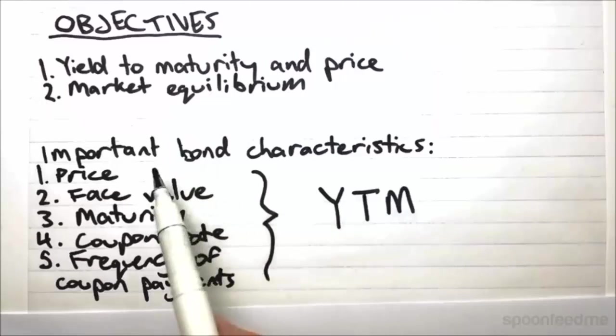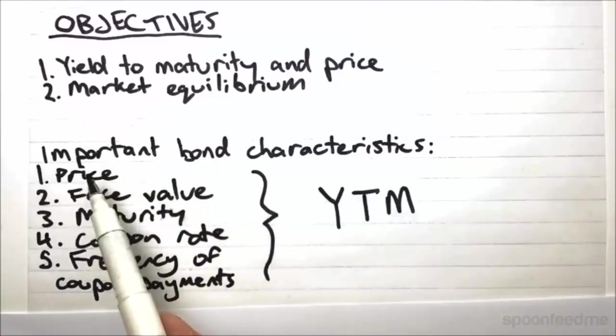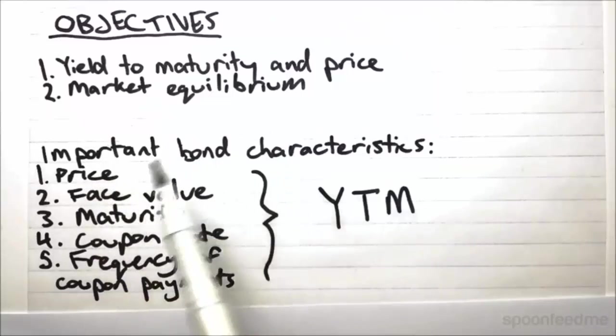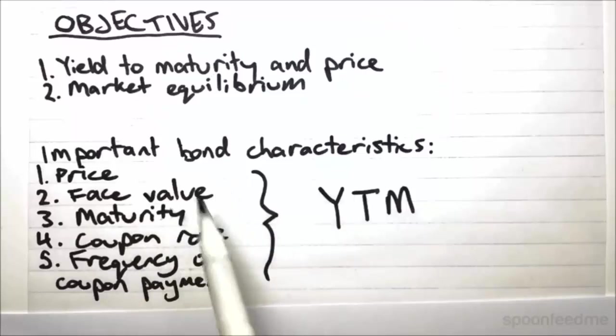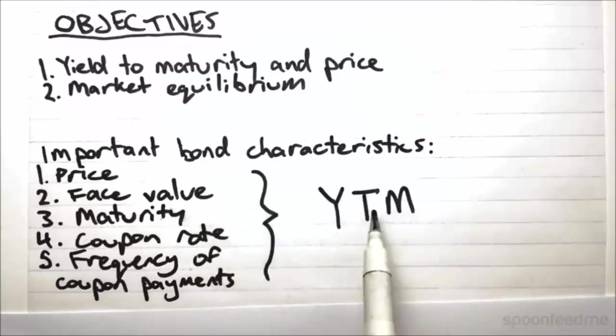The very important distinction being that you can't use the price to compare bonds with different maturities and different coupon rates and stuff like that because they're not really comparable in that way. But they are comparable using the yield to maturity.